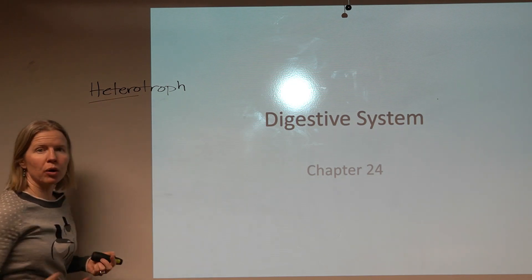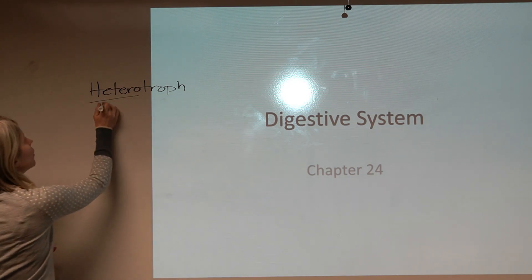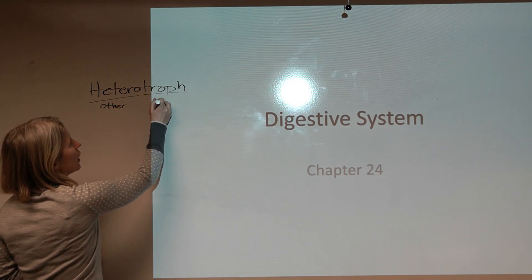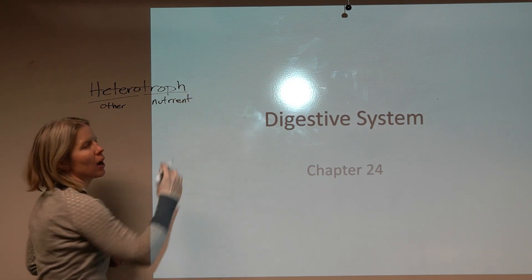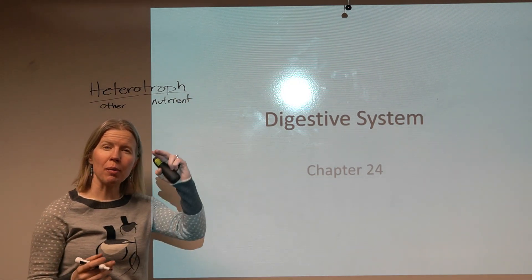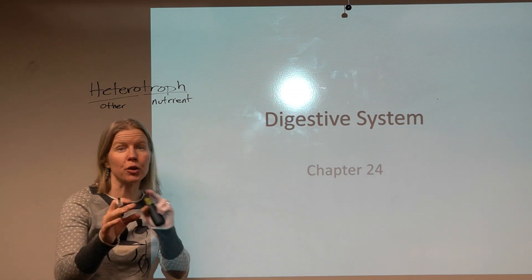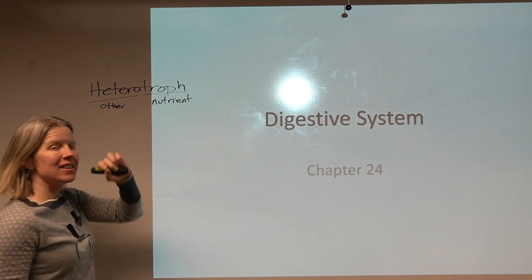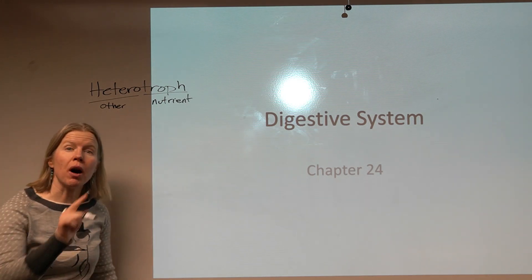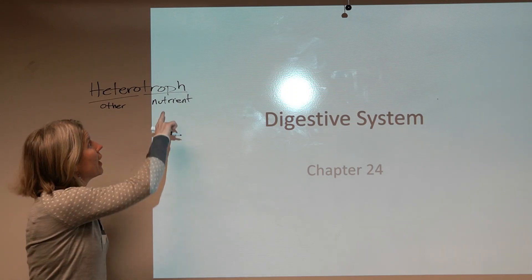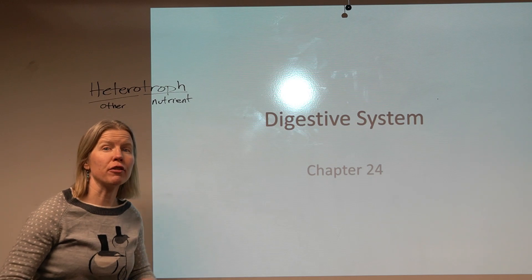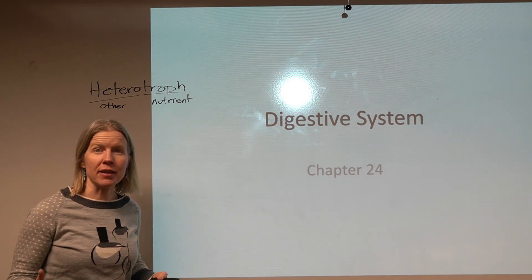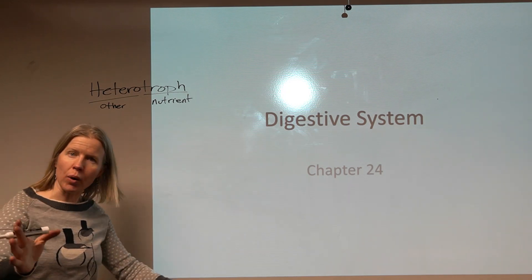If we break this word apart: hetero meaning other, troph — we're thinking about nutrients. If you've taken an ecology class, you'll talk about different trophic levels, different eating levels — producer, consumer, herbivore, carnivore. So as a heterotroph, you must consume other organisms in order to get your nutrients. You're not an autotroph. You're not a plant or producer. You can't capture energy from sunlight. You have to eat another organism.